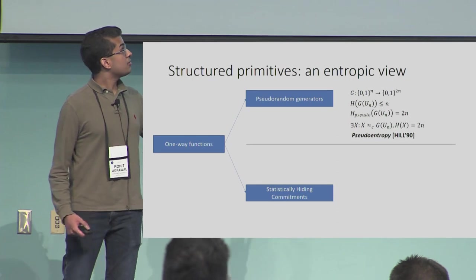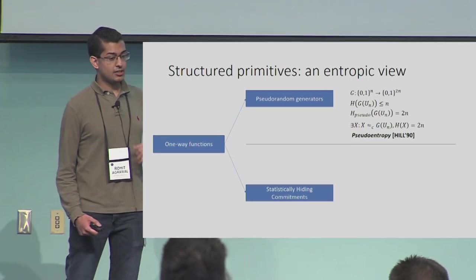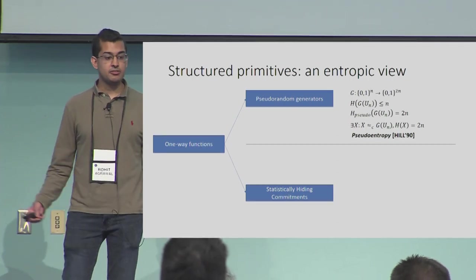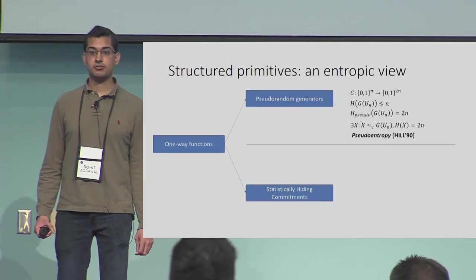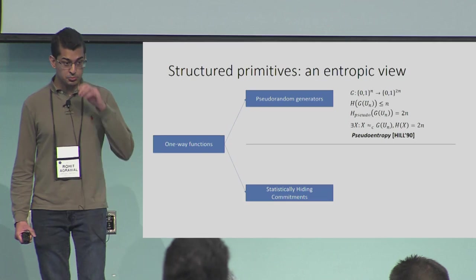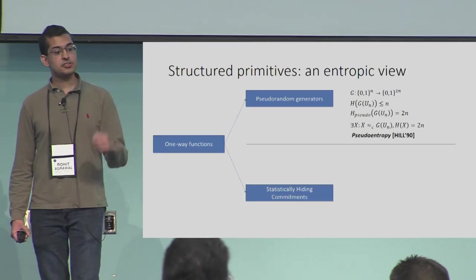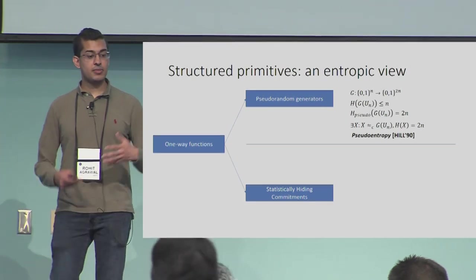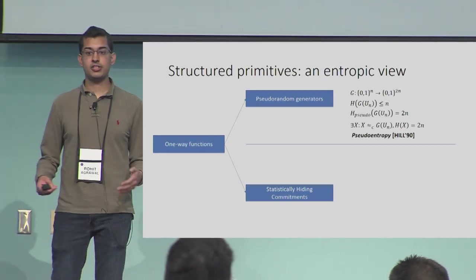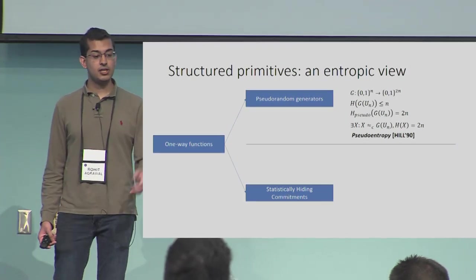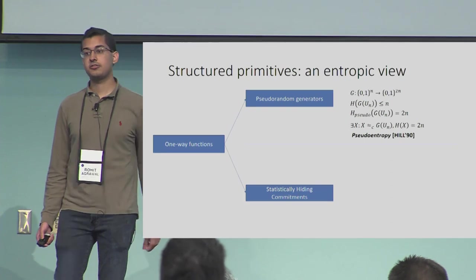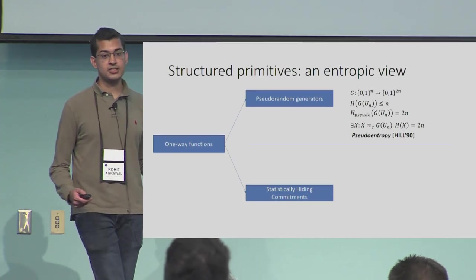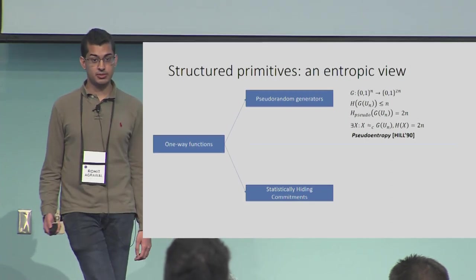Note that in this case, the distribution X is simply the uniform distribution on 2n bits. So a pseudorandom generator is a maximal form of pseudo-entropy generation — not only is the pseudo-entropy more than the true entropy n, it's actually as large as it possibly could be.